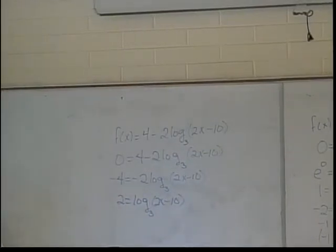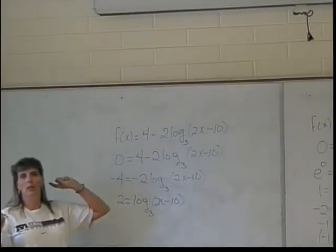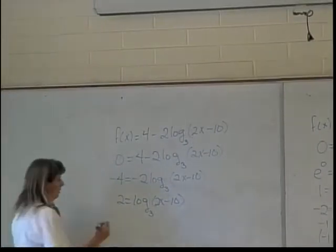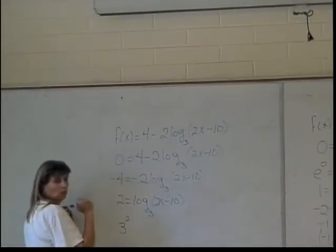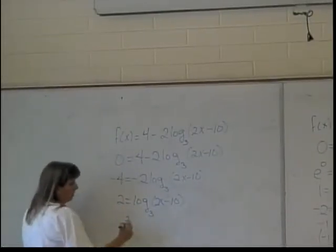And now? Change to exponential form. It will be 3 squared equals 2x minus 10.